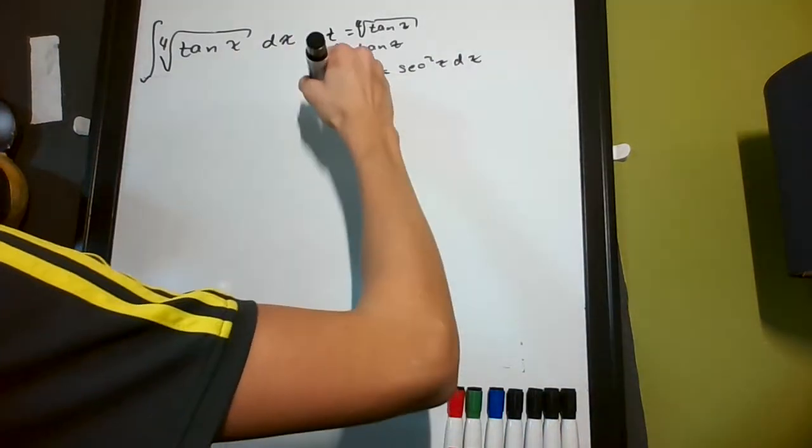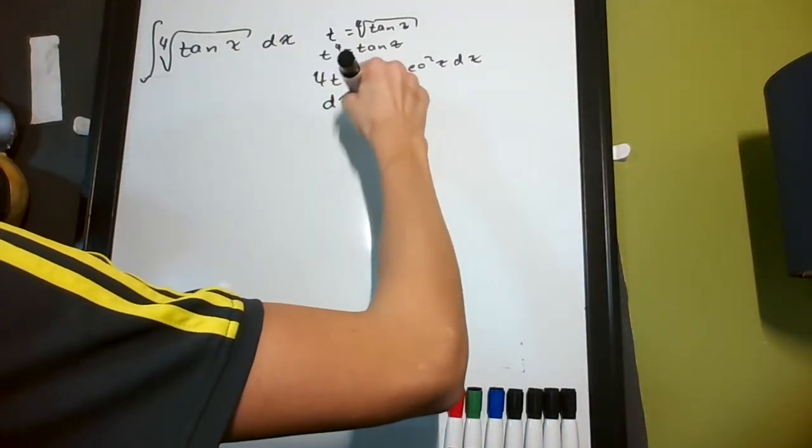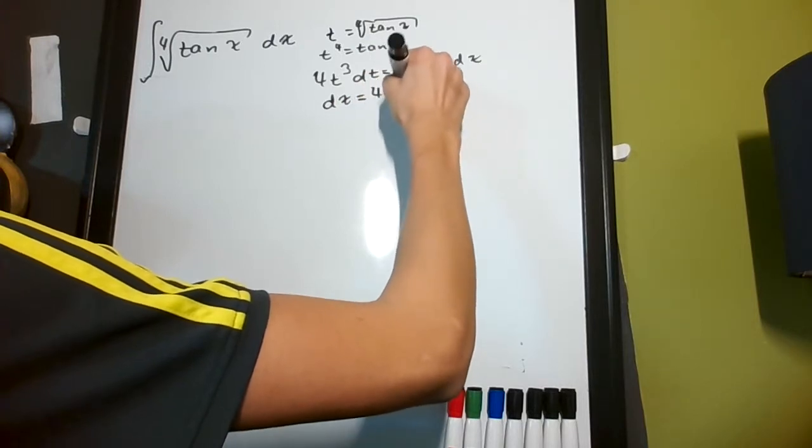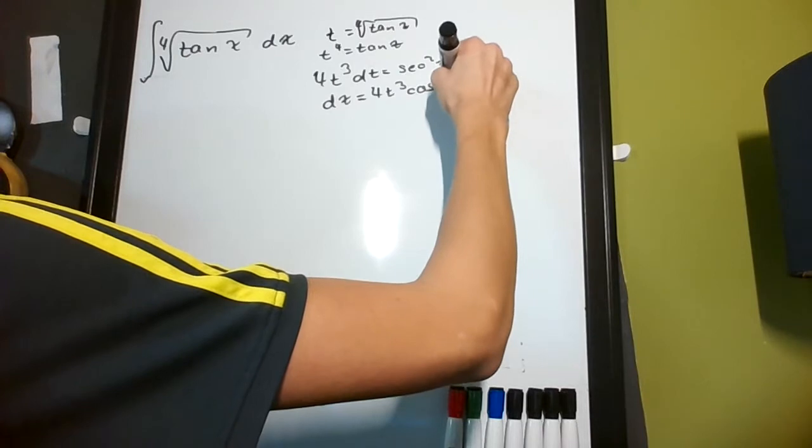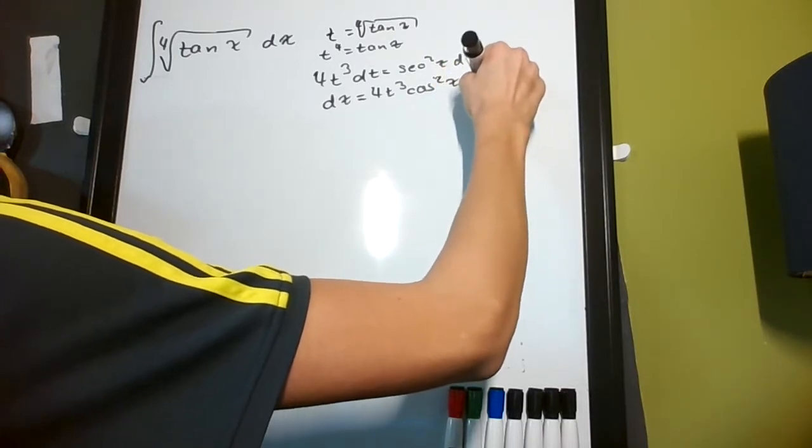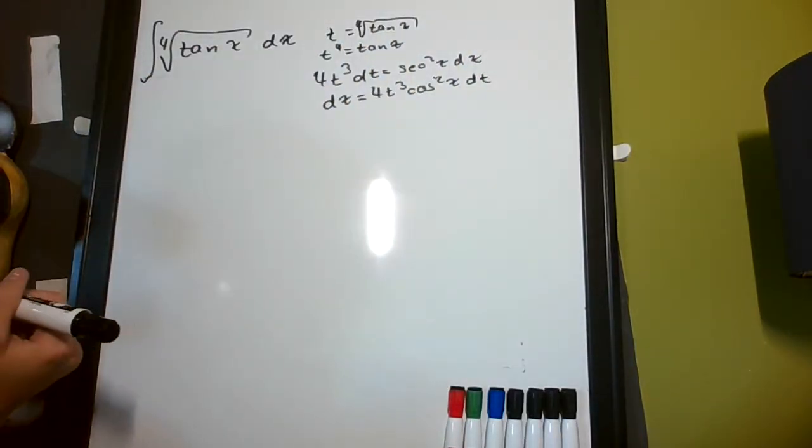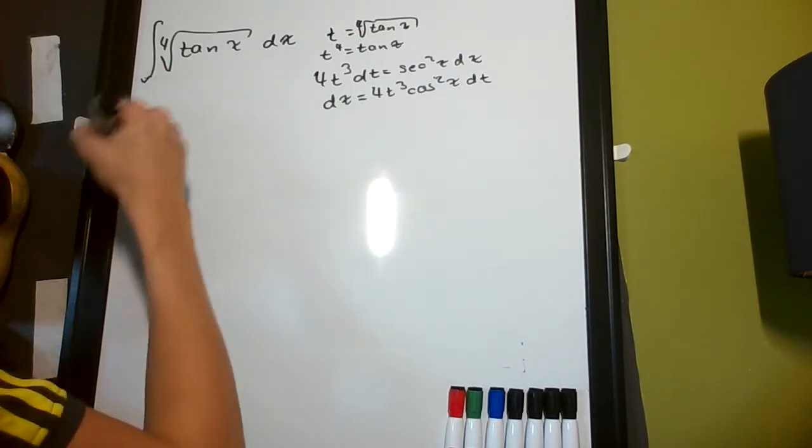Or, in other words, dx is going to be 4t cubed cosine squared x dt, dividing both sides by secant squared. So, what do I get out of this?